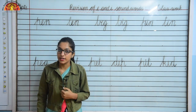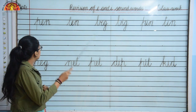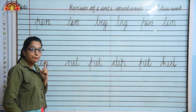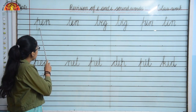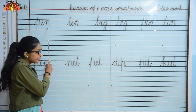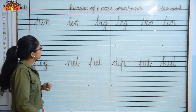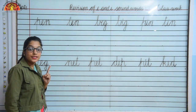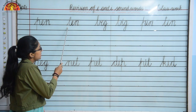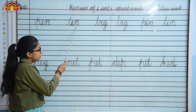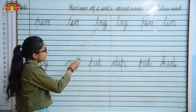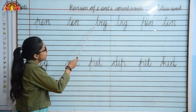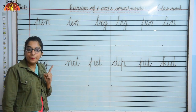First we are going to read. So look over here kids. P, E, N — Pen. P, E, N — Pen. T, E, N — Ten. T, E, N — Ten. Next is B, E, G — Beg. B, E, G — Beg.